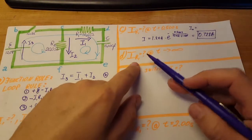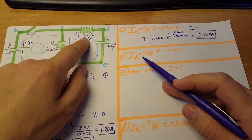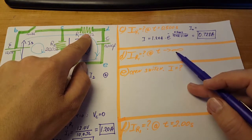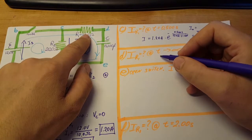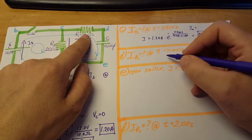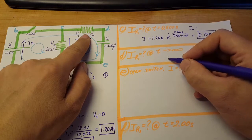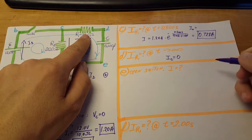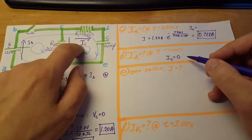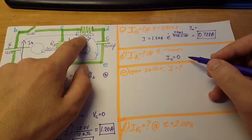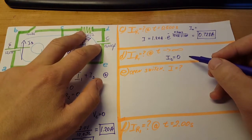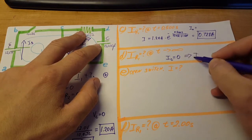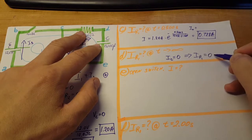For part d, we find the current through R1 at time equals infinity — a long time after the switch was closed. A long time after closing, the capacitor is fully charged, so no more current flows through it. Since the capacitor is in series with R1, the current through R1 will also be zero amps.